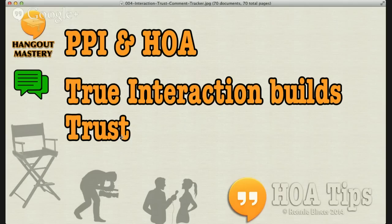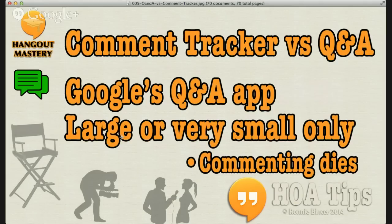I'm a little concerned about some of the tools Google has been introducing because I believe they actually take away some of the interaction. A common question is: do I use the Comment Tracker or do I use the Q&A app? Google's Q&A app — questions and answers — is useful in two very specific situations: when you have a very large Hangout on Air gathering where you'd never get to all the comments and the crowd votes for which question they want to see, or when it's so small that nobody's there and you don't want people to know that.